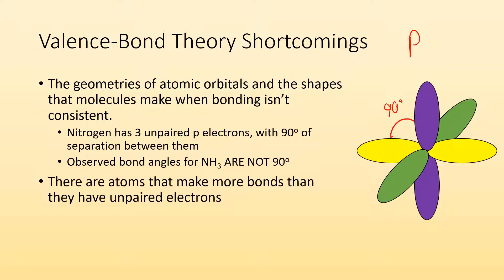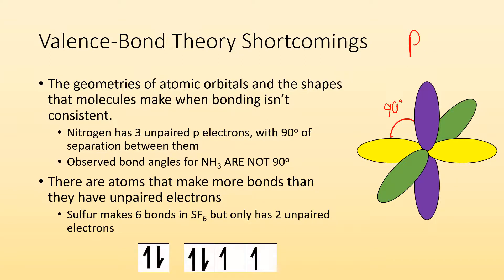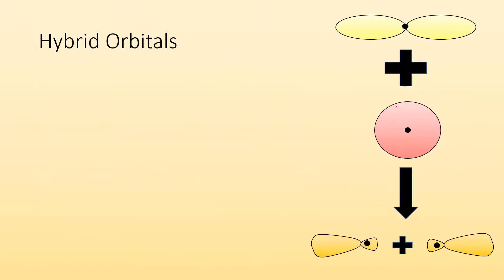There are also atoms that make more bonds than they have unpaired electrons. NH3 has three unpaired electrons 90 degrees away from each other, but when you look at NH3, they don't have 90 degrees of separation. There are also atoms like sulfur, which makes six bonds in SF6 but only has two unpaired electrons. So how is it able to make all of those bonds if there are only two electrons that need to be paired up? That's where hybrid orbital theory will come into play.